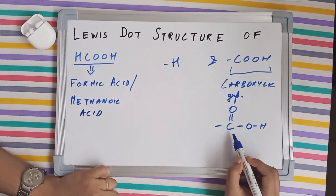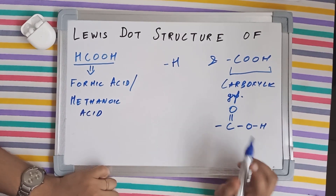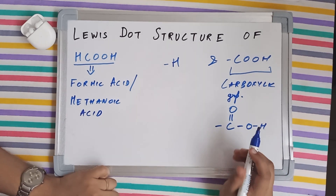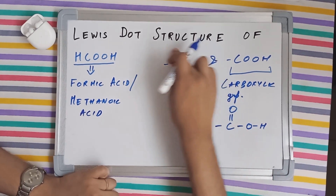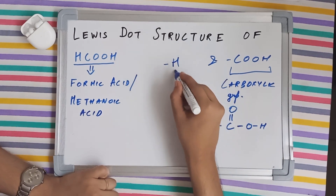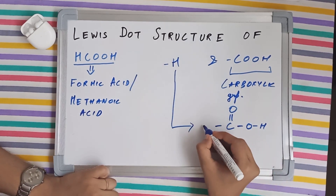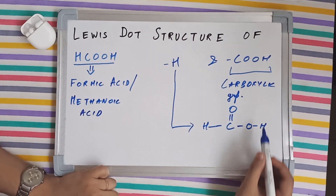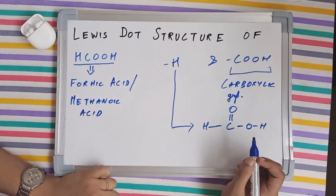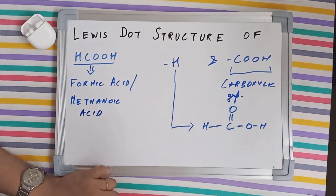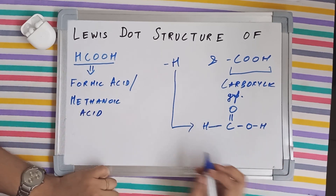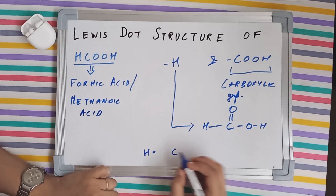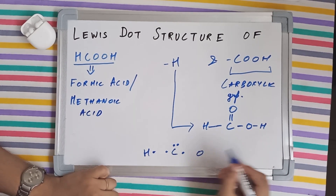This hydrogen, this oxygen, and this oxygen have all completed their need for electrons. But carbon has presently made only three bonds, whereas carbon needs to make four bonds. So this is where the remaining hydrogen comes in and makes a bond with carbon, completing its fourth bond.